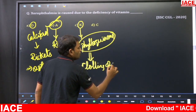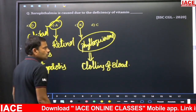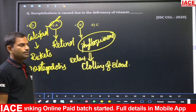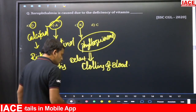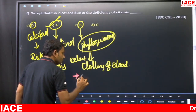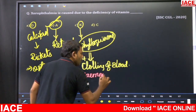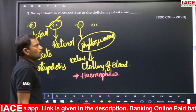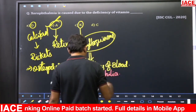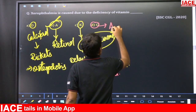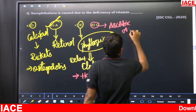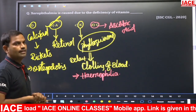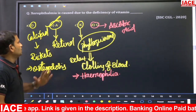If vitamin K is not present in sufficient quantity in the body, there may be a delay in clotting of blood. If vitamin K deficiency occurs genetically, that leads to a condition called hemophilia, also called bleeder's disease and royal disease. Vitamin C — option D — is called ascorbic acid, required for healing of wounds and fractures, and its deficiency disease is scurvy.